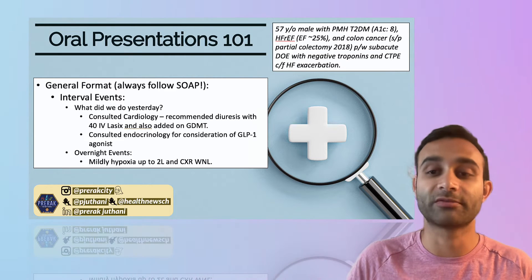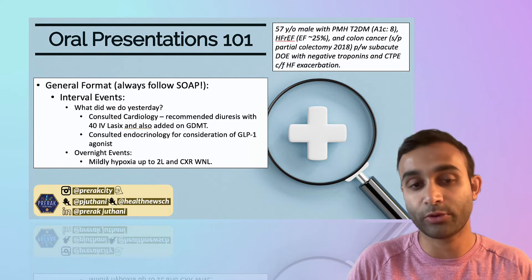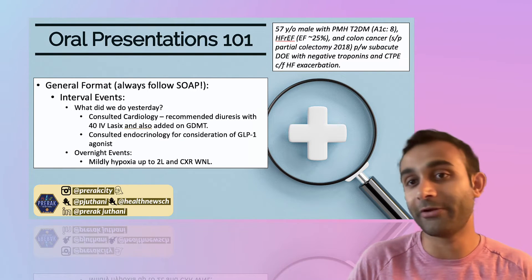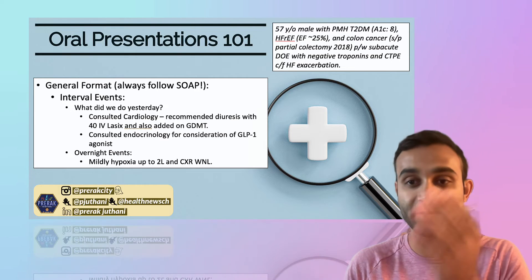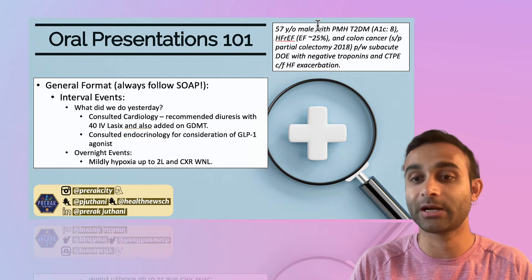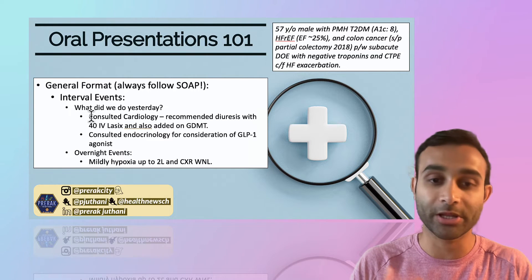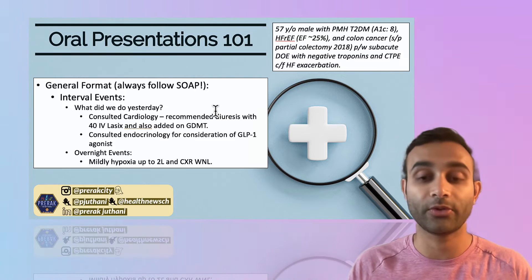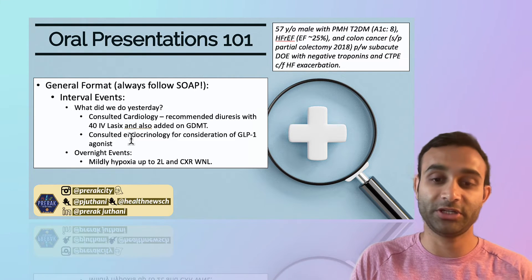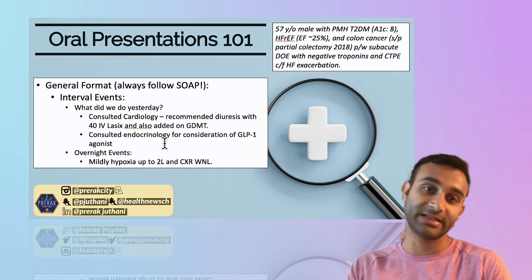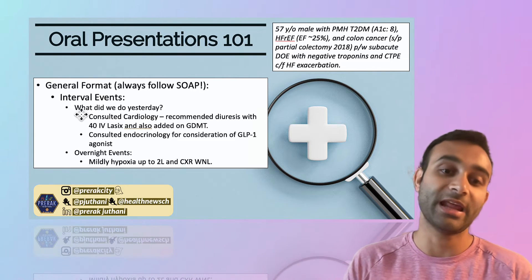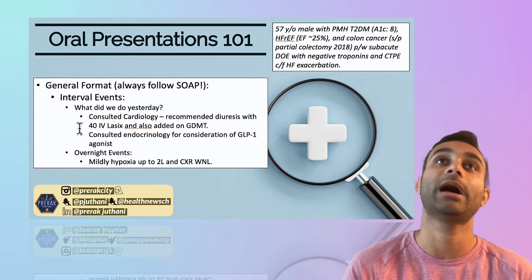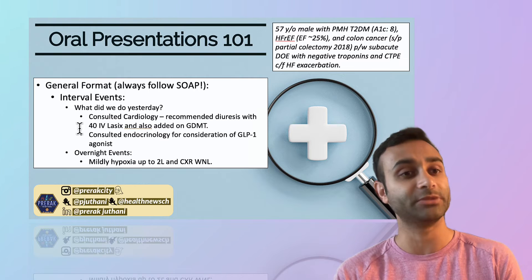Then I try to always do interval events. The reason they're important is because the things we did to the patient yesterday are going to be very relevant to what we do today. So yesterday, for this exact patient, in terms of interval events: we consulted cardiology, we gave 40 of IV Lasix, and we added some guideline-directed medical therapy. We also consulted endocrinology for consideration of a GLP-1 agonist in an outpatient setting. This zones everyone in on what we were doing for the patient yesterday.